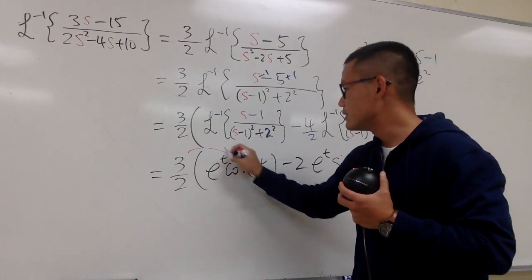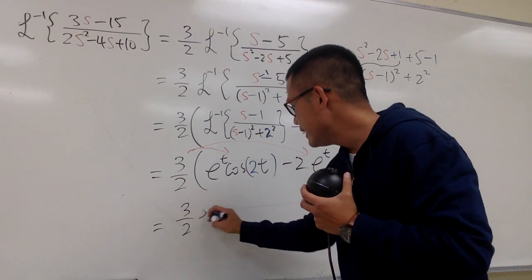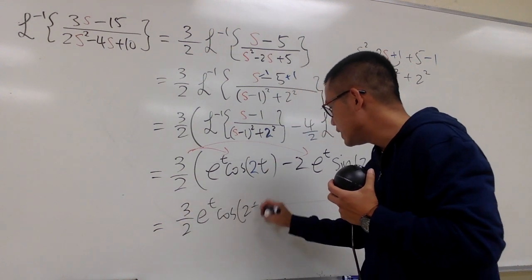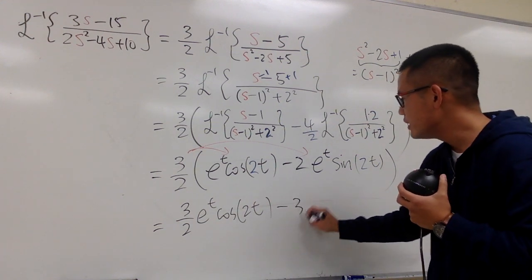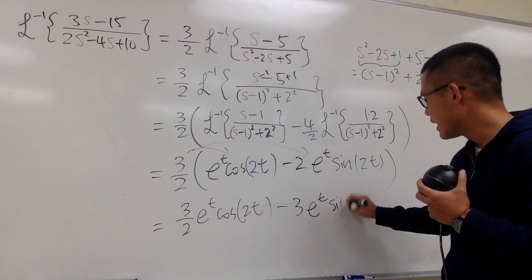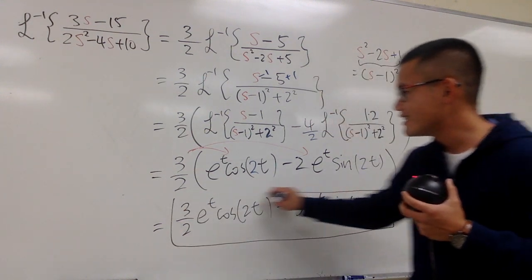At the end, of course, distribute, distribute, and we'll be done. Here we'll have 3 half e to the t cosine 2t, and then this times that, the 2 will cancel off. So we have minus 3 e to the t sine of 2t, and then we are done.